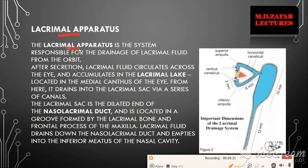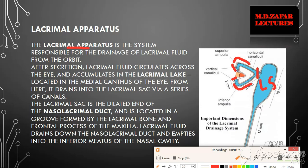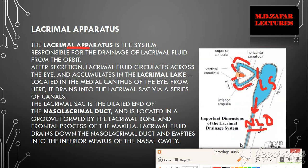The lacrimal apparatus is the system responsible for drainage of lacrimal fluid. Lacrimal fluid is produced by the lacrimal gland and drained by the lacrimal apparatus. After secretion, the fluid circulates across the eye and accumulates in the lacrimal lake at the medial canthus. From here it drains via the puncta into vertical and horizontal canaliculi, then through the common canalicular duct into the lacrimal sac, which narrows into the nasolacrimal duct. The nasolacrimal duct has a valve at its end known as the valve of Hasner.